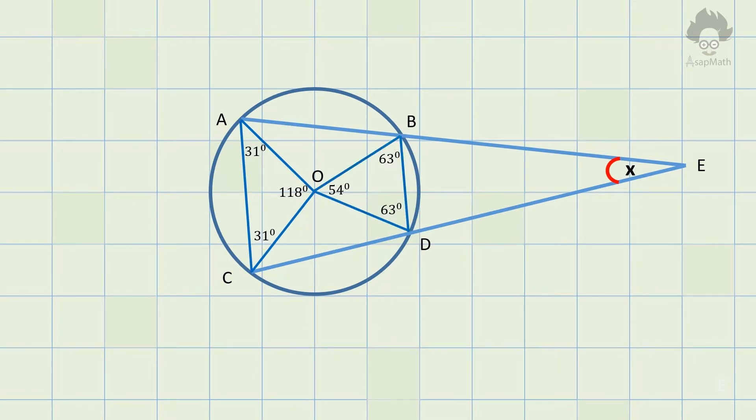If we consider AOB triangle, it is also an isosceles triangle. Therefore, angle BAO equals angle ABO. Let's consider both angles as B. Now we depict angle A as 31 plus B and angle B as 63 plus B.